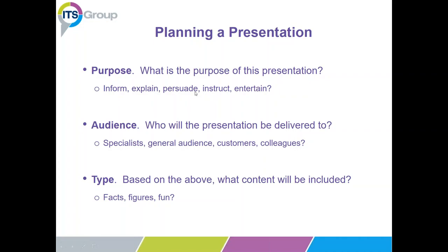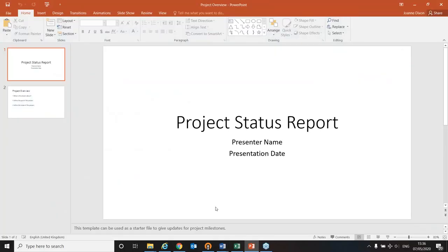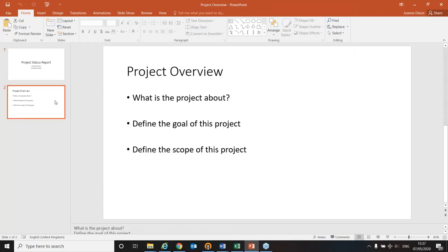I'm going to start with an existing presentation — my project overview — which only has two slides. First, I'll look at how we can get content into our presentation if we know it exists elsewhere. I have some slides in another presentation that I've done in the past that would be really useful here, and rather than retyping I can import the slides directly. I've clicked on the last slide because I want the new slides going at the end.